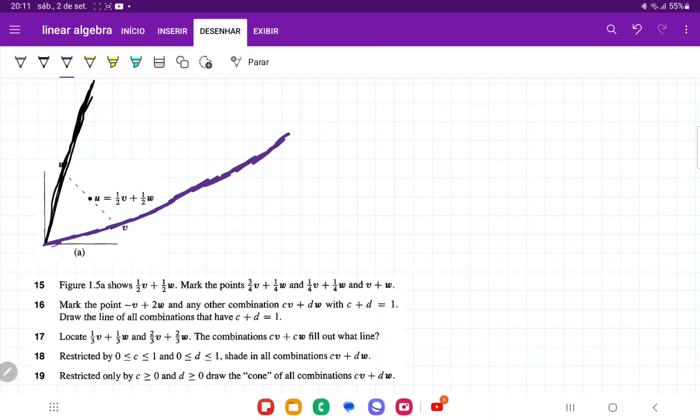So it means that all the linear combinations are going to lie in this cone right here. We can't ever go outside this cone because at most we can have scalar multiples of W plus scalar multiples of V.